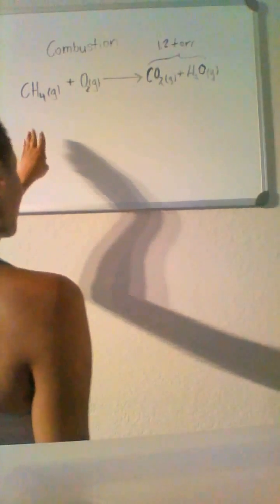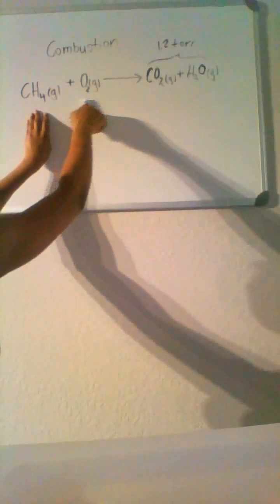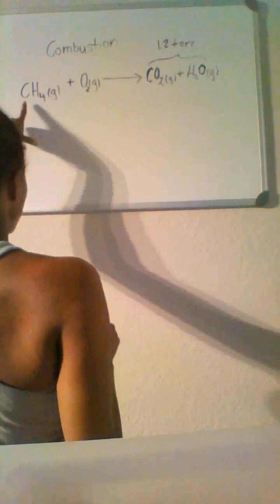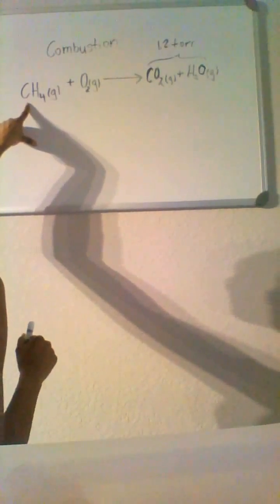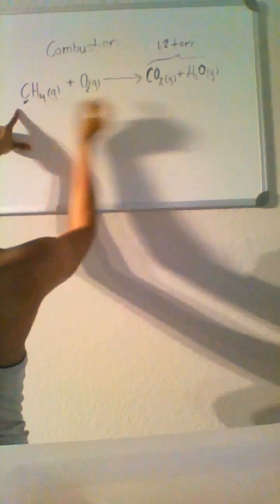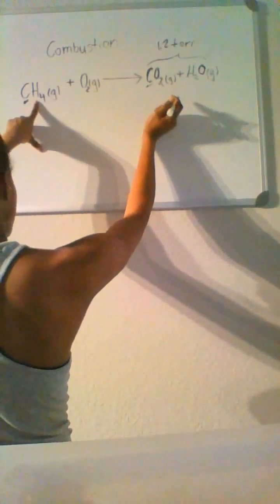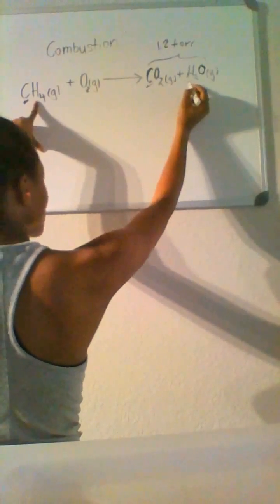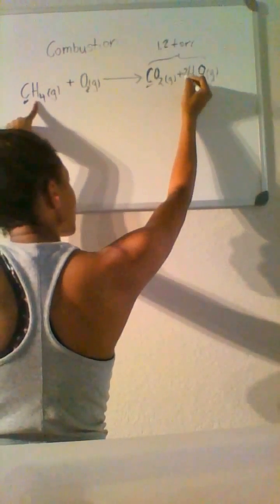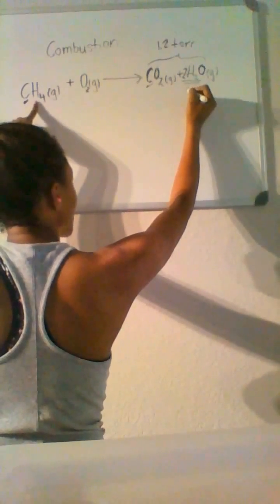So on the reactant side, we have one carbon, one carbon on the product side, that's balanced. On the reactant side, we have four hydrogens and only two on the product side. So we're going to add in a 2, giving us four hydrogens.